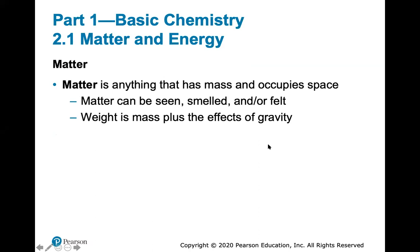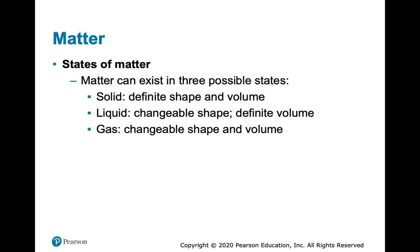We'll first talk about matter, which is anything that has mass and occupies space. Matter can be seen, smelled, or felt. Weight is mass plus the effects of gravity. States of matter: matter can exist as a solid, which has a definite shape and volume; a liquid has a changeable shape but definite volume; and a gas has both a changeable shape and volume. An example of a solid is a desk, a liquid is a drink, and a gas is the air you're breathing.